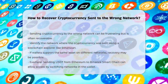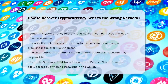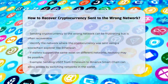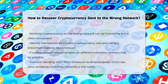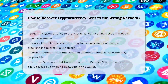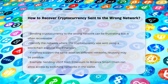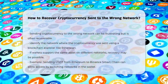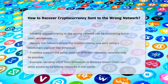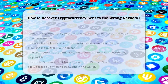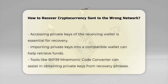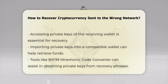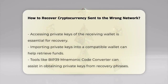If the wallets involved support the same asset on different networks, you might be able to recover the funds. For example, if you sent USDT from Ethereum to a wallet on Binance Smart Chain, the funds could still be available on the Ethereum blockchain — you just need to switch to the correct network within your wallet interface to access them.